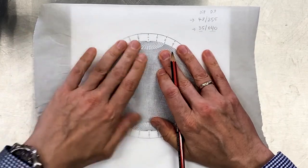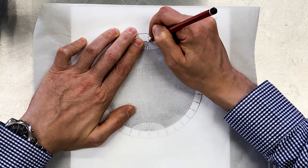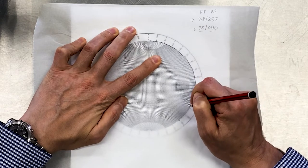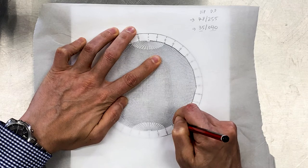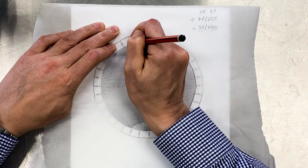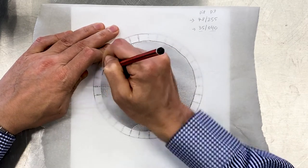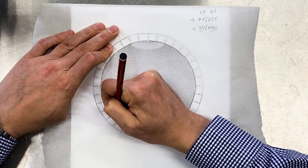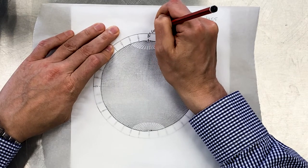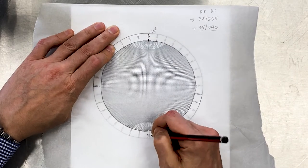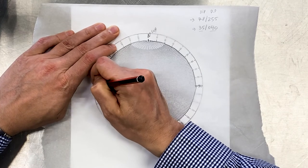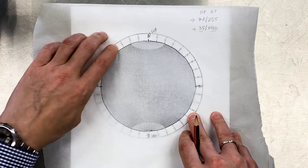The first thing that we'll do, we're going to trace the circumference of the stereonet on this tracing paper. It's better to use pencil so that if you make a mistake, you can always erase it. Then we're going to note north, which is zero degrees, then here south which is 180, here we have 90, and here 270. Why we do this? Because we're going to move the tracing paper around so that we know its original position.